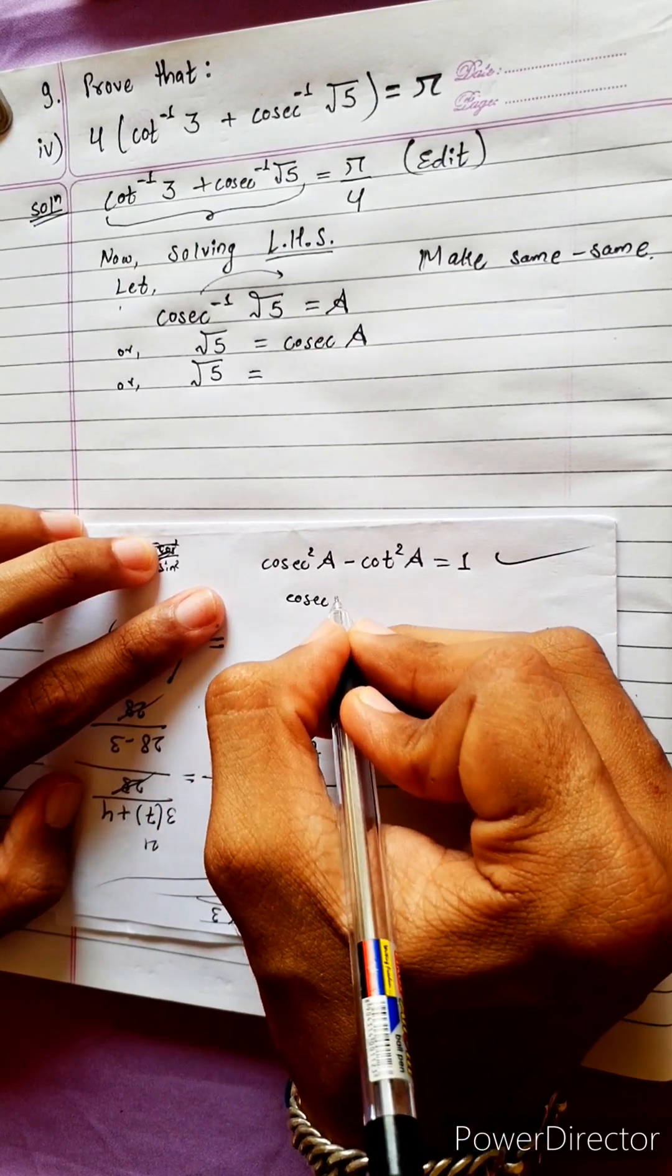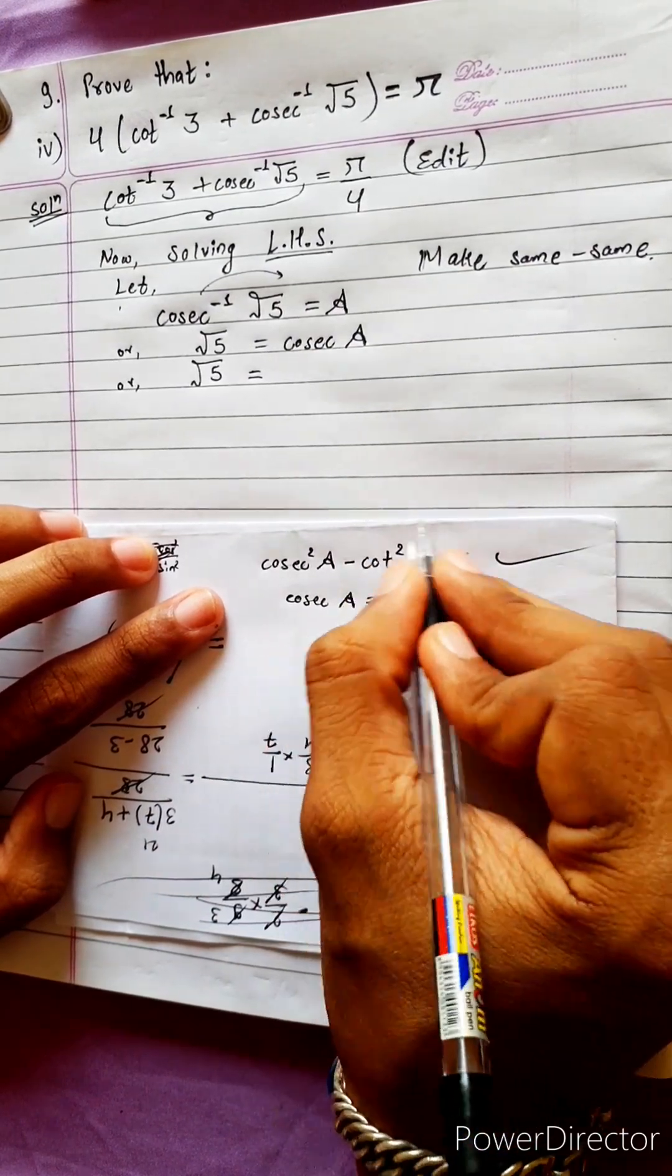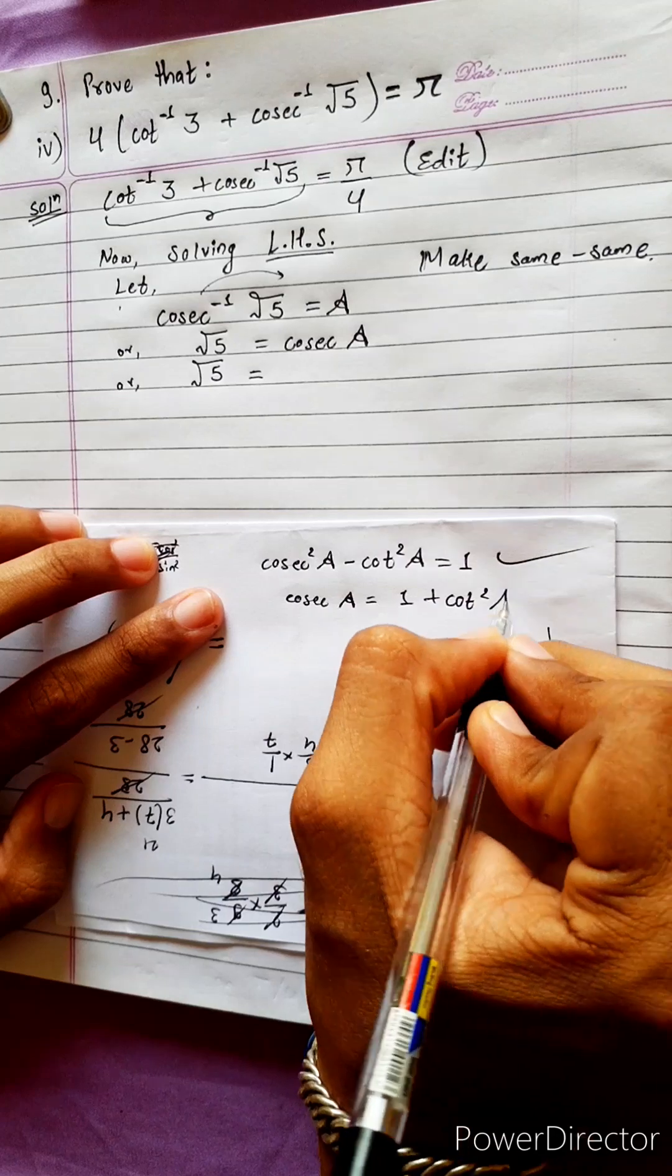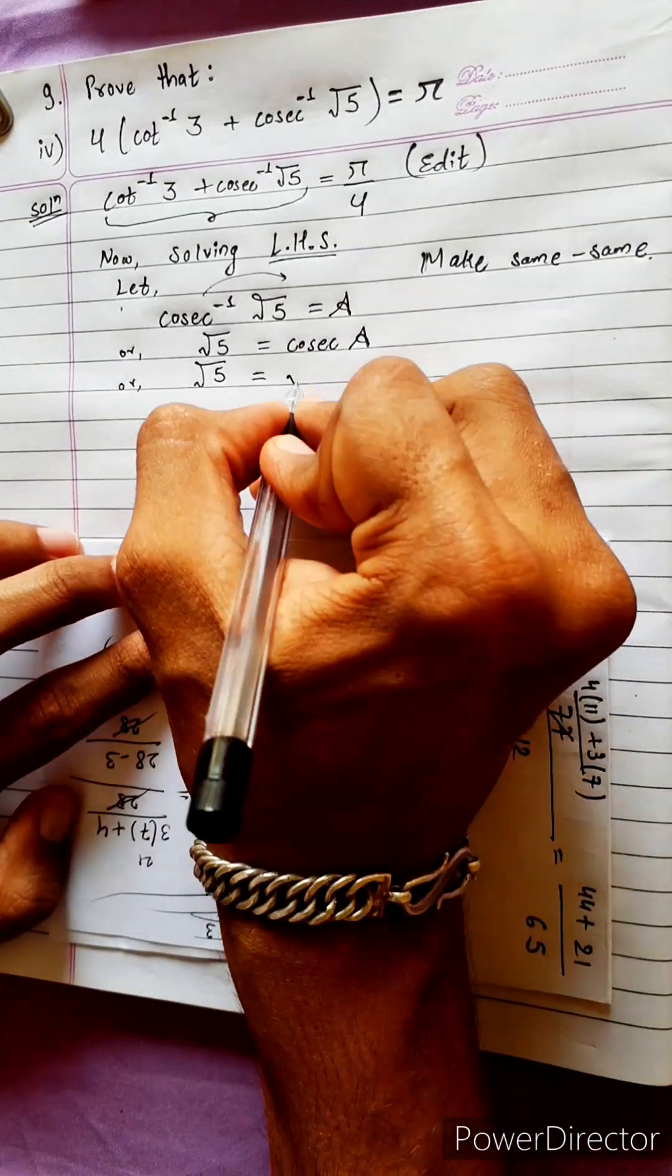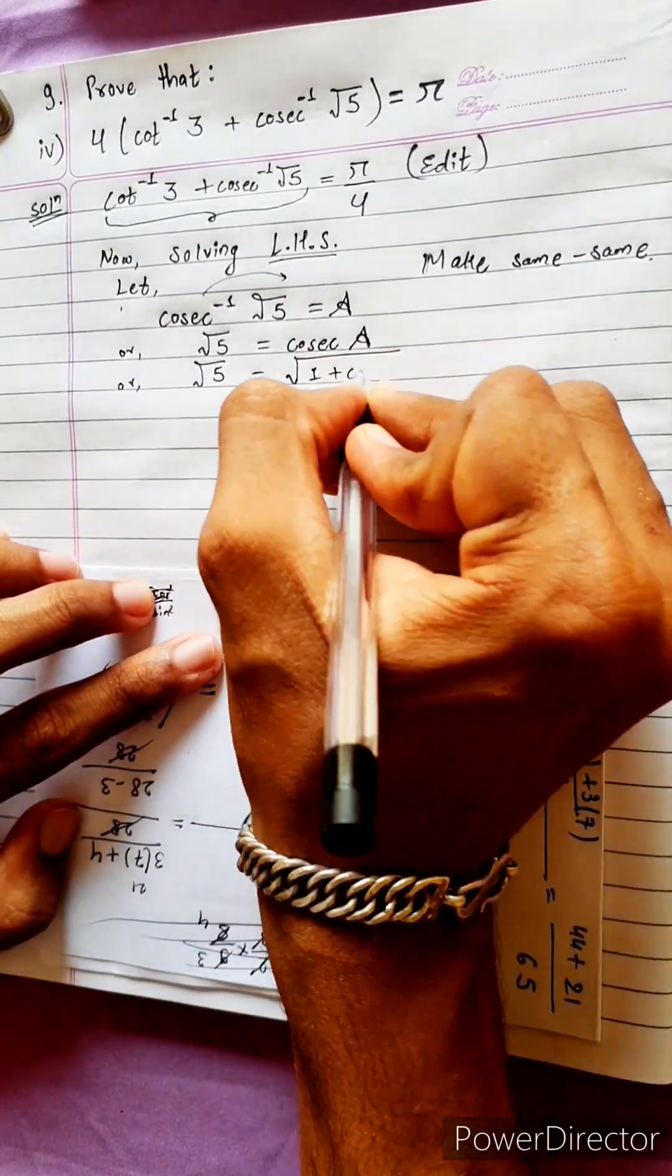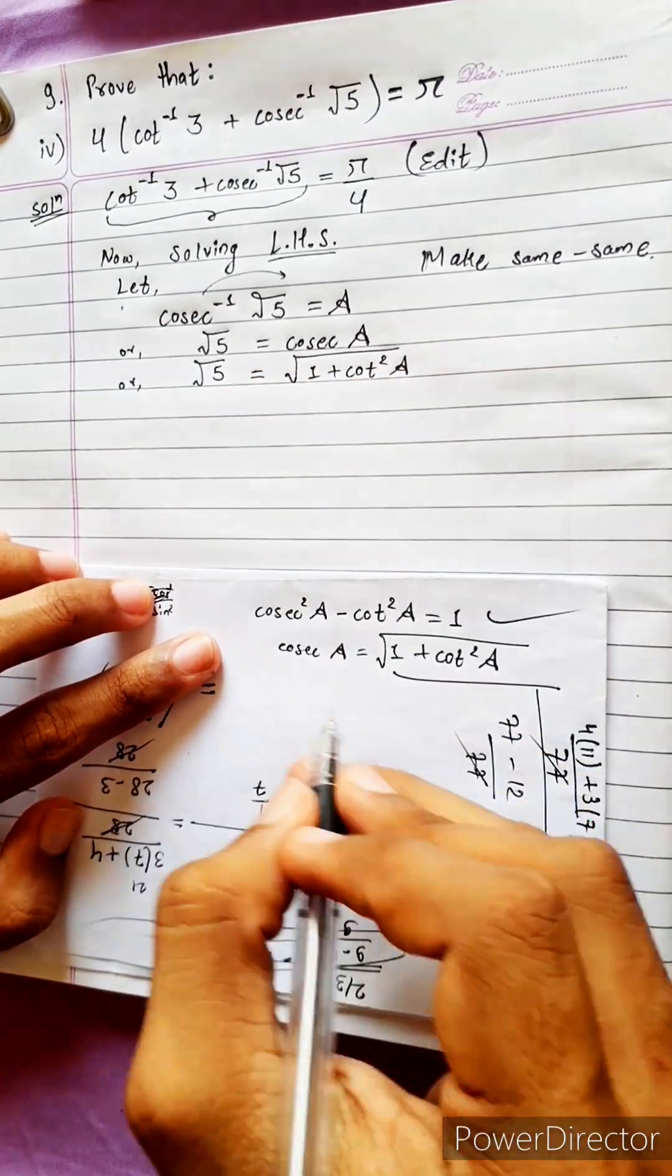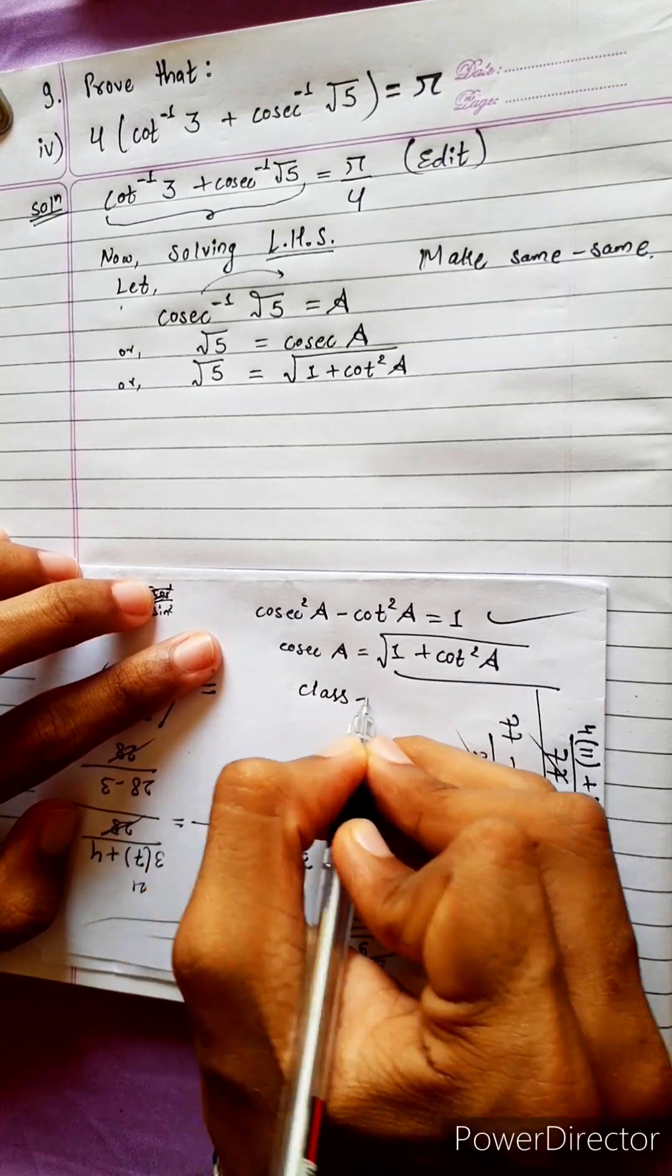Cosec A equals to 1. And this is the root of cosec A. This is the root of a formula, 1 plus cot square A.